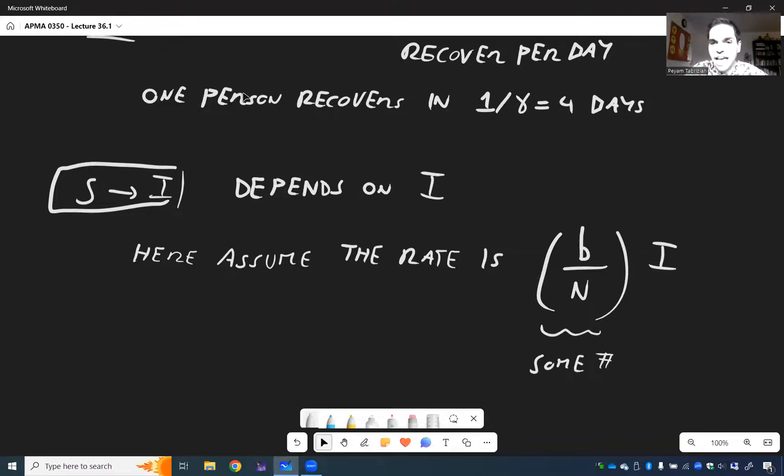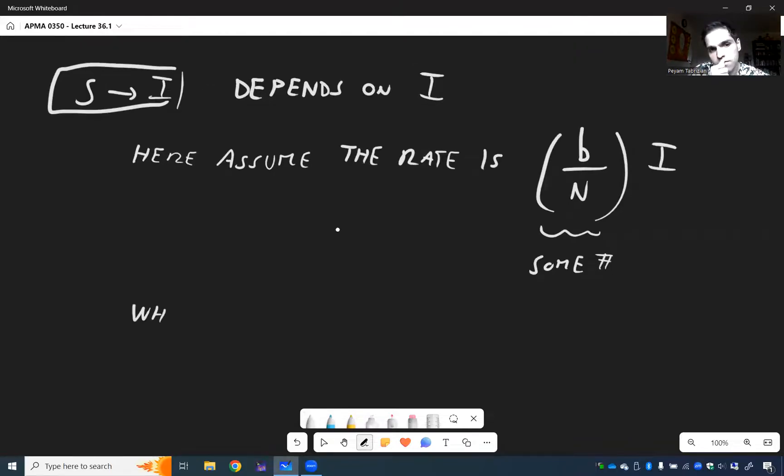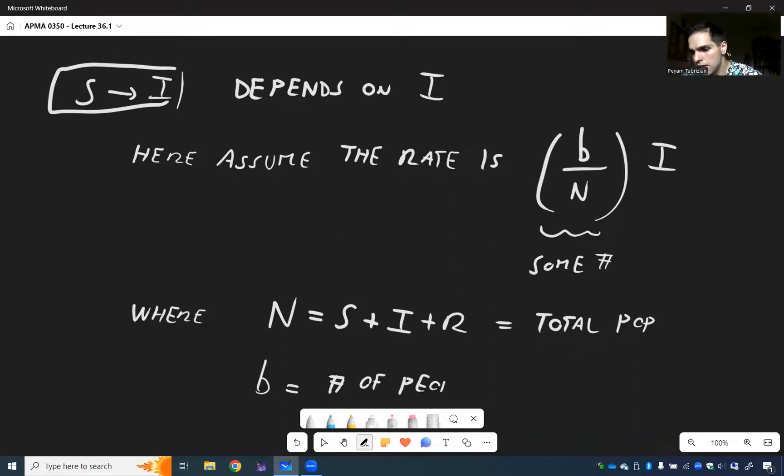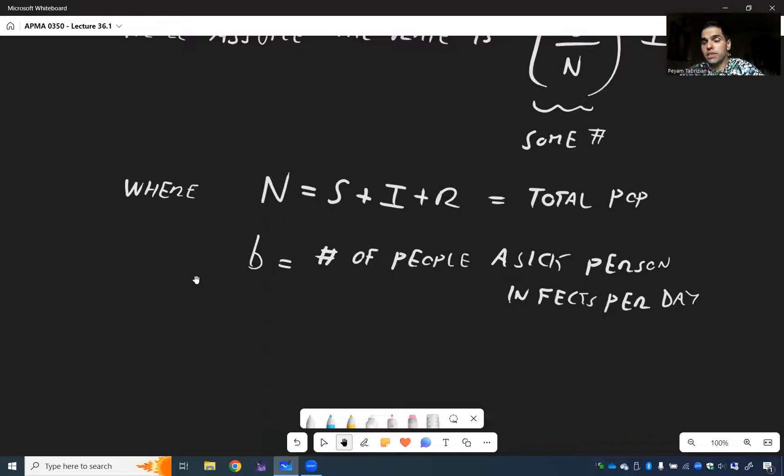Which, by the way, it makes sense that the other one doesn't depend on I or R. Because, well, the more people recover, that doesn't affect the infected people at all. So here, assume the rate is simply some number B over N times I. Some number, and here, what is N? That's the total population. And is S plus I plus R. Which, again, we don't assume yet is constant. And B is the number of people a sick person infects per day. Like if B is three, then a sick person infects three people per day.